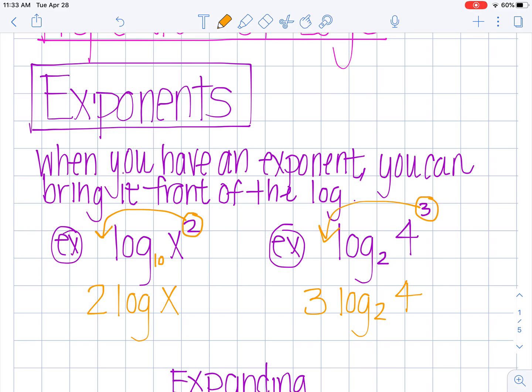You can even take this a step further and simplify log base 2 of 4 because this is saying 2 to the what power is equal to 4. I know 2 squared is equal to 4. So this becomes 3 times 2 or 6 is your final answer. When we're doing this we are expanding. When we have our exponent up there and we are moving it out in front that is called expanding.